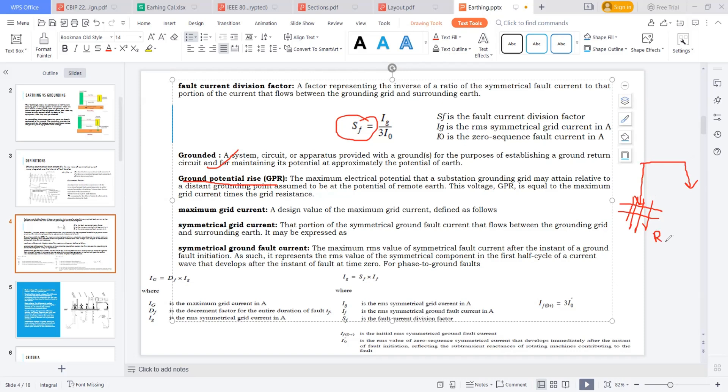Suppose I'm calculating the grid resistance RG. The grid, in the sense of a mesh - we are laying some electrical conductors below the ground, like flats or rods, whatever it may be. I'm calling this a grid, and I'm calculating the resistance of this grid as RG. I know IG, which is the current flowing in the grid.